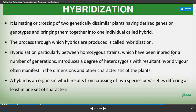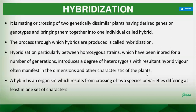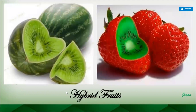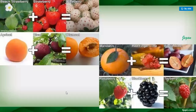Hybridization particularly between homozygous strains that have been inbred for a number of generations introduces a degree of heterozygosis. The resultant hybrid vigor often manifests in improved dimensions and other characteristics of the plants. The hybrid organism results from the crossing of two species or varieties differing in at least one set of characters.